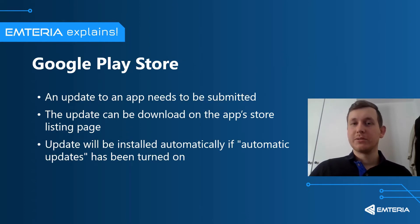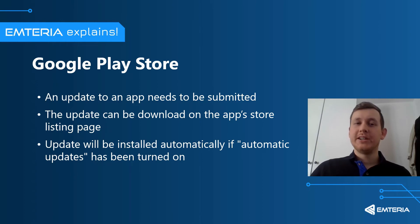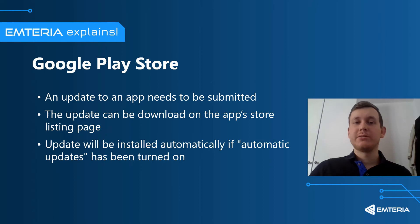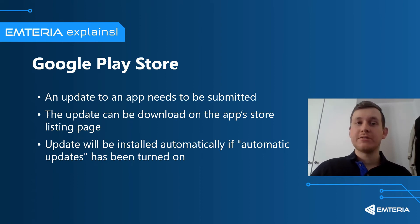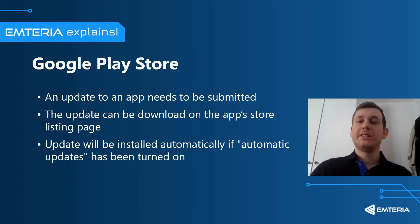The obvious choice is the Google Play Store. Once your update is ready, you can create a new release. An update to an app needs to be submitted first. After the update is published, it will start being distributed to existing users. Once the update is available, the user can download it on the App Store listing page or from their My Apps page. Or the update will be downloaded and installed automatically if automatic updates have been turned on for the app.